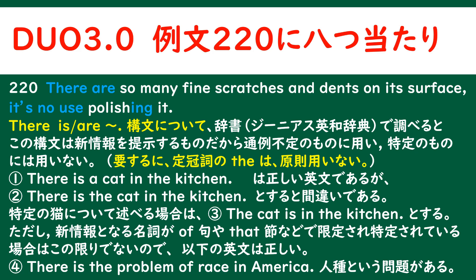ただし、新情報となる名詞が、of句や関係詞節などで限定され、特定されている場合は、この限りでないので、という風な説明がありまして、まあ「There is the other」など、「the」は来ないのかというと、来る可能性もあると、こう書いてありまして、例えばの例として④のような「There is the problem race in America」だったら別に正しい英文ということになっております。